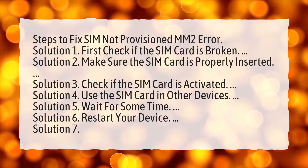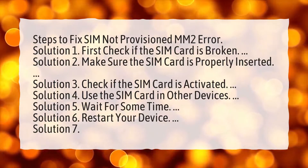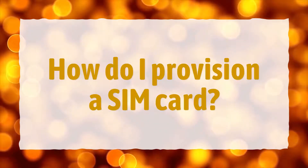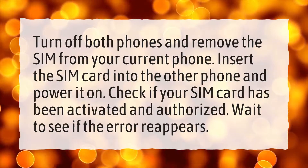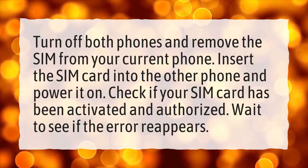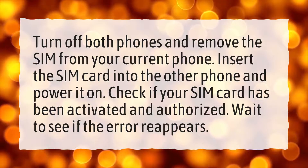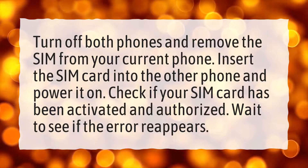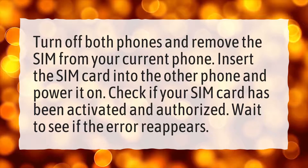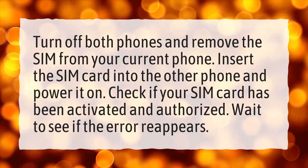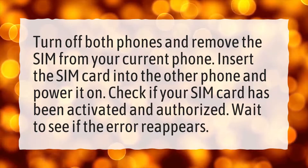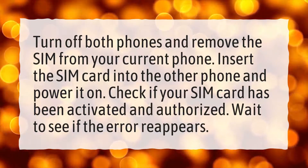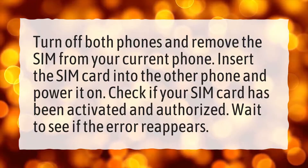Solution 7: How do I provision a SIM card? Turn off both phones and remove the SIM from your current phone. Insert the SIM card into the other phone and power it on. Check if your SIM card has been activated and authorized, and wait to see if the error reappears.